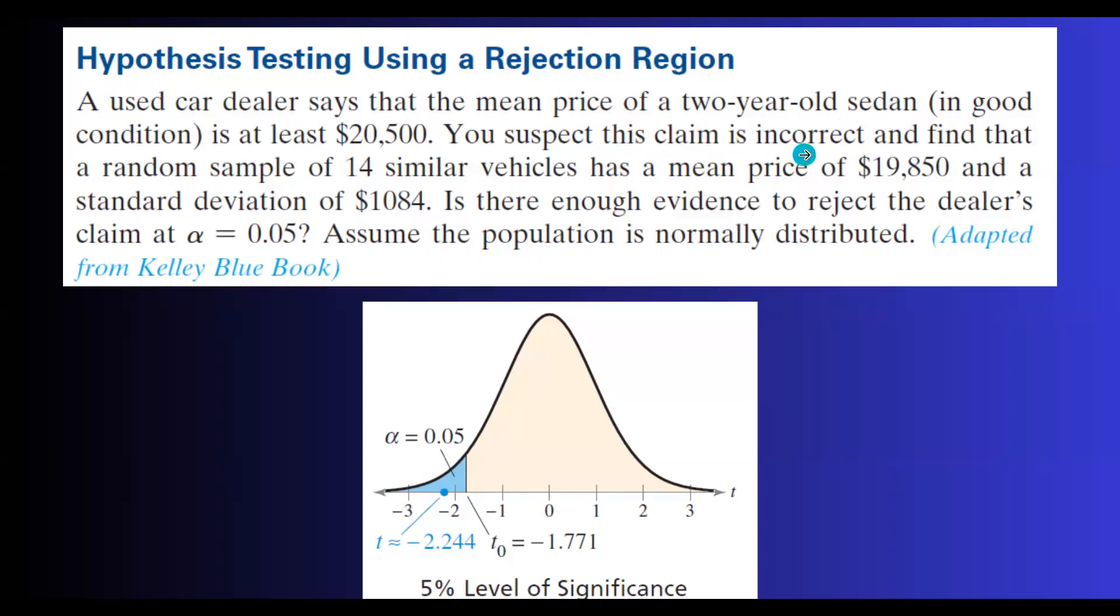You suspect this claim is incorrect, and as a statistician, you find a random sample of 14 similar vehicles with a mean price of $19,850 and a standard deviation of $1,084. Is there enough evidence to reject the dealer's claim at a 5% level of significance?